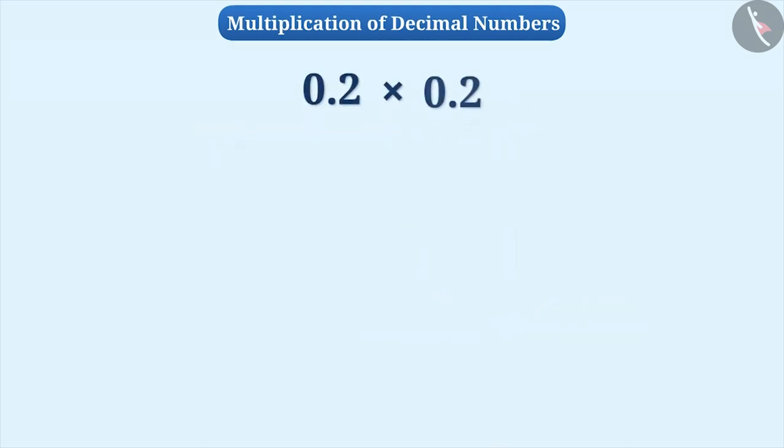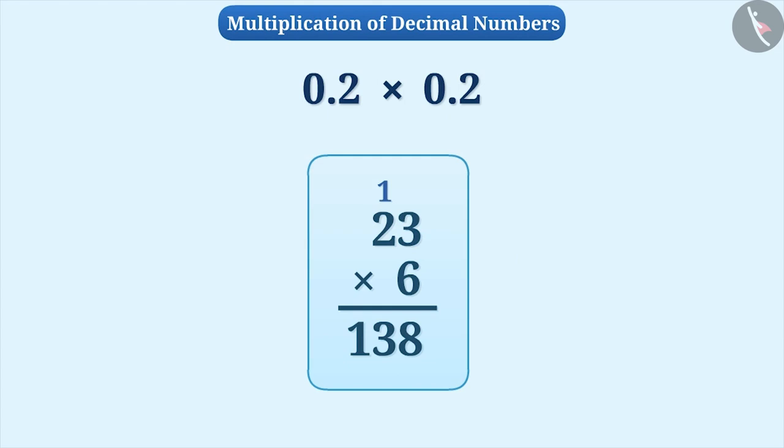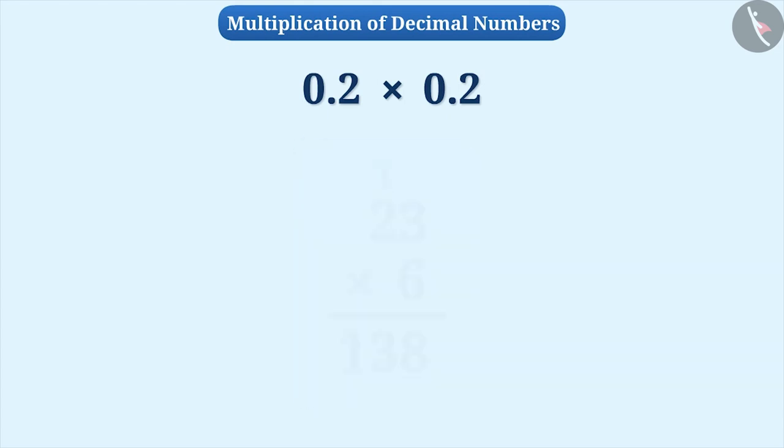Multiplication of two decimal numbers is similar to multiplication of whole numbers. In this method, we will place the given decimal numbers one below another. Here we ignore the decimal point and carry out their multiplication as that of whole numbers.